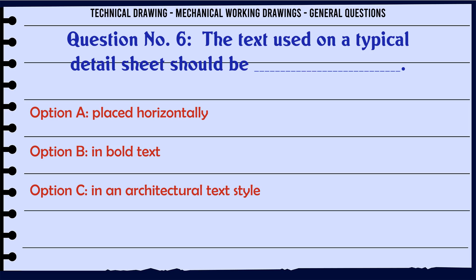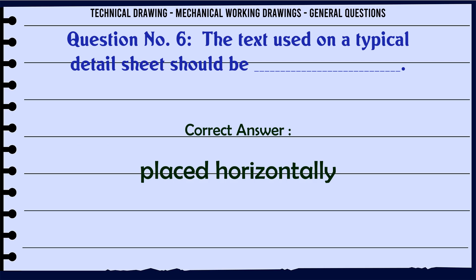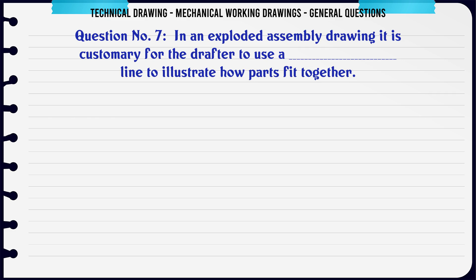The text used on a typical detail sheet should be: A. Placed horizontally, B. In bold text, C. In an architectural text style, D. None of the above. The correct answer is Placed horizontally.